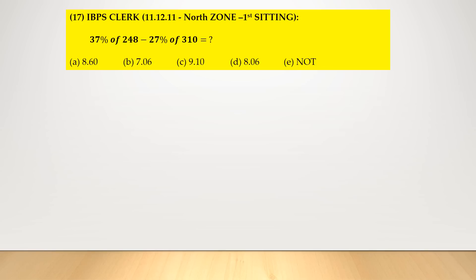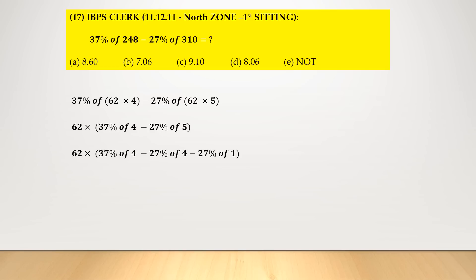Question: 37% of 248 minus 27% of 310. 248 = 62 × 4 and 310 = 62 × 5, so 62 is taken as common: 62 × [37% of 4 minus 27% of 5]. Breaking 5 as 4 + 1: 62 × [(37 − 27)% of 4 minus 27% of 1] = 62 × [10% of 4 minus 1% of 27] = 62 × [0.4 − 0.27] = 62 × 0.13 = 8.06. Option number D.